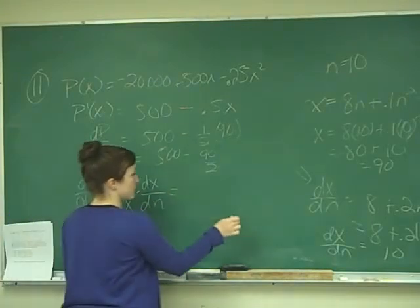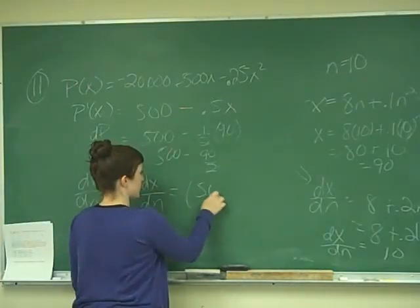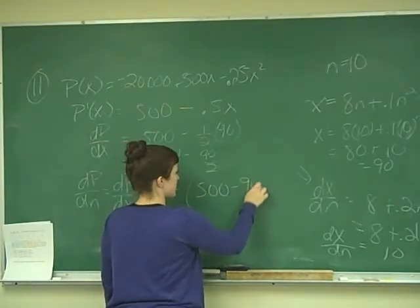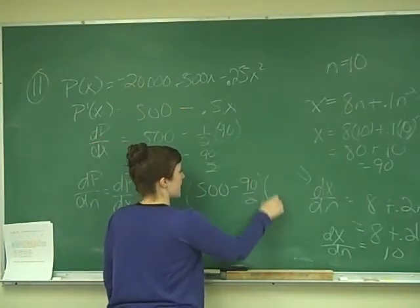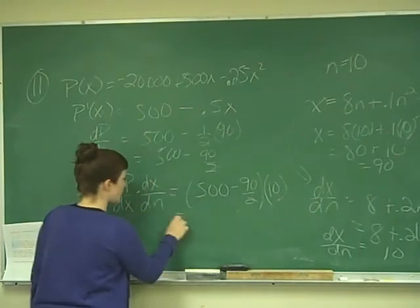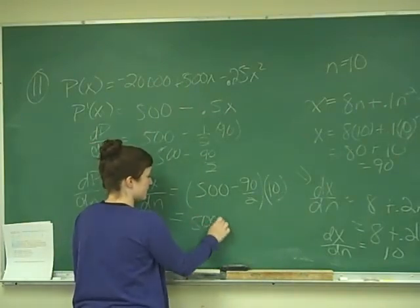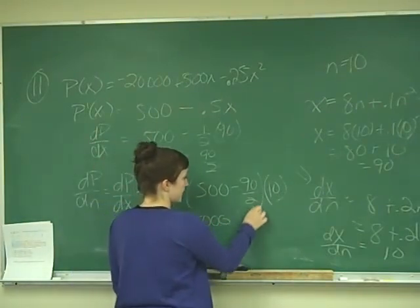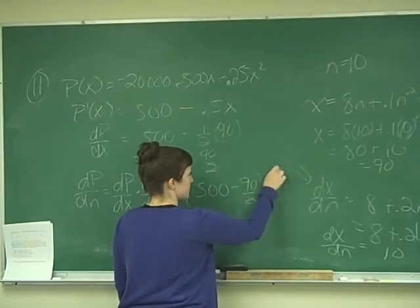Which would be equal to 500 minus 90 over 2 times 10. So that gives me 5,000 minus, and let me simplify.